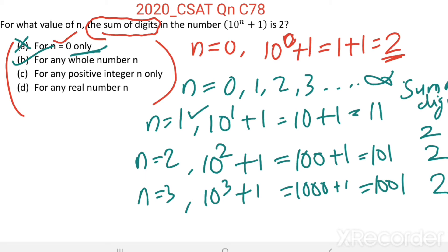The third option says for any positive integer n only. Positive integers are natural numbers: 1, 2, 3 up to infinity. We already found these are satisfying, but not only for positive integers — for n equal to 0 also the sum of digits in 10^n + 1 is 2. Therefore, the option saying positive integers only is false.